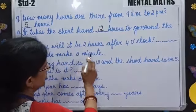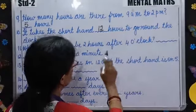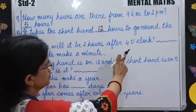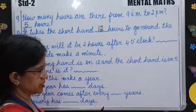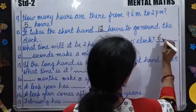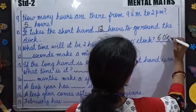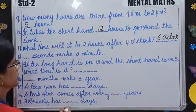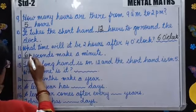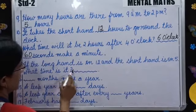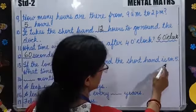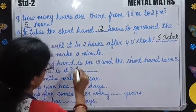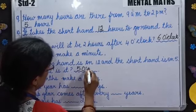What time will it be 2 hours after 4 o'clock? That means you'll count after 4: 5, 6. So it is 6 o'clock. Question number 12: How many seconds make a minute? 60 seconds. If the long hand is on 12 and the short hand is on 5, what time is it? It is 5 o'clock.